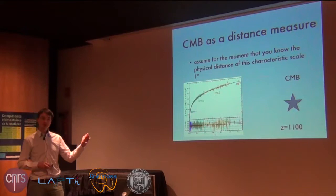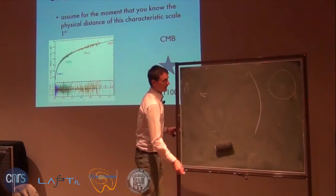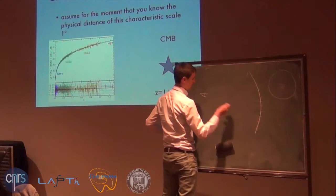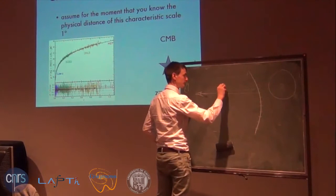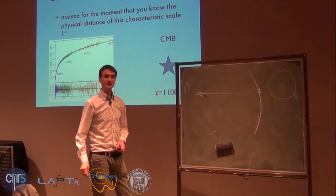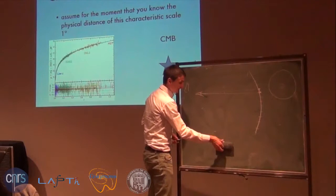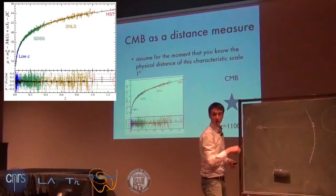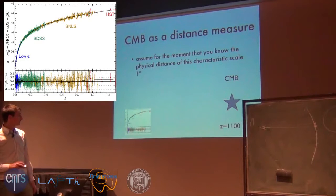In standard physics, if photons travel through a completely transparent universe, there is an exact relation: luminosity distance equals angular diameter distance times (1 + z) squared. Now, assume for the moment that we know what the typical distance in the CMB corresponds to in physical distance. We observe the CMB anisotropy at roughly 1 degree. The model tells us — and I will explain in the next courses — how to infer what the typical distance of the anisotropy in the CMB is. If we know that, we observe the angle, we know the physical size, and we can infer the angular diameter distance, which is the same as the luminosity distance for these standard candles times a factor of redshift.